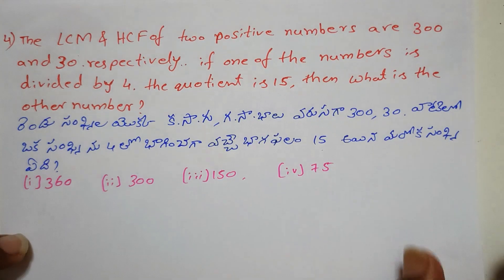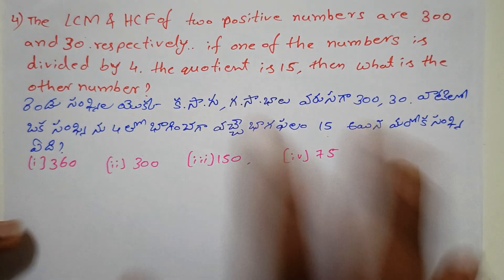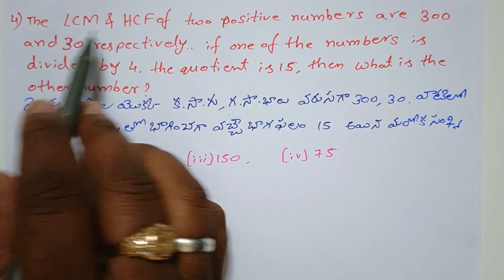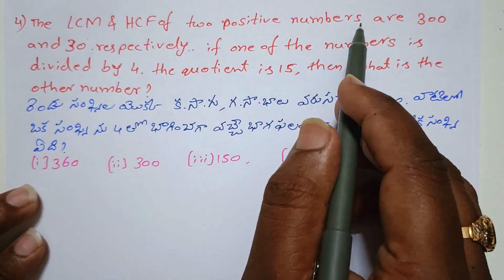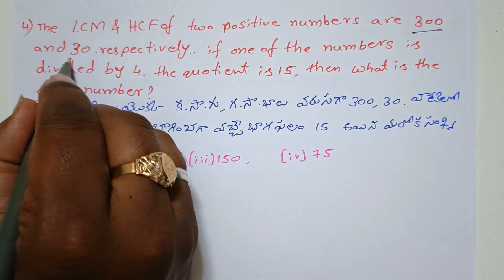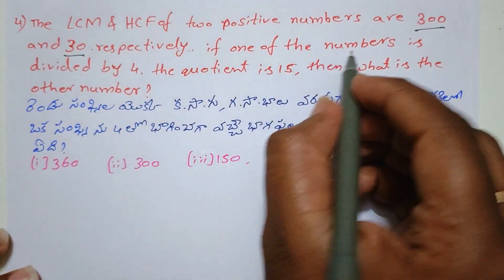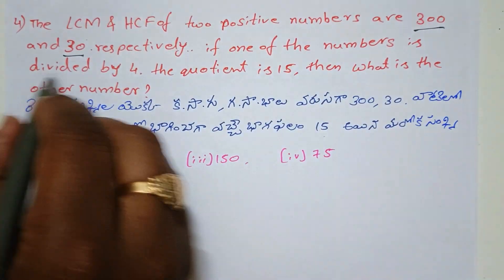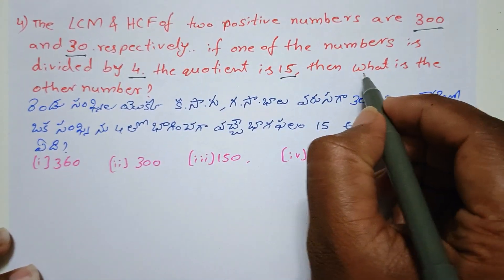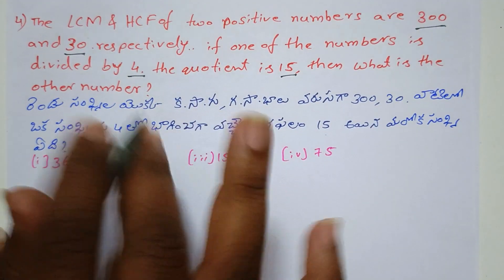The fourth question is a normal but different model. The LCM and HCF of two positive numbers are 300 and 30 respectively. If one of the numbers is divided by 4 and the quotient is 15, then what is the other number?